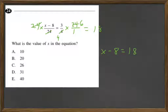Next we want to get x by itself by adding 8 here, and then add 8 on the other side. So now we have x equals 26. The answer is C.